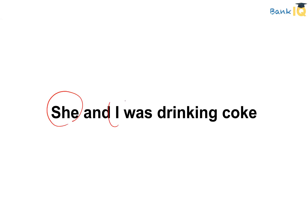Fourth error: 'She and I was drinking coke.' The verb must be plural because the subject consists of two people — she and I. So the correct sentence is: 'She and I were drinking coke.' That becomes the correct usage here.